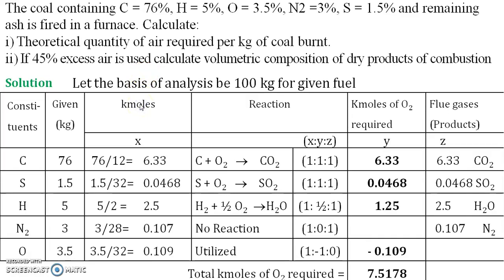This table is very important. First, you have to calculate the amount of oxygen required for the burning of the given fuel. We have considered 100 kg as the weight of the fuel, so all the given percentages are now directly converted into kg — no further conversion is required.